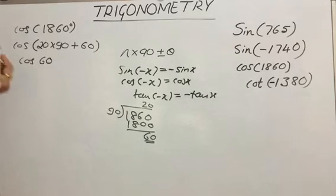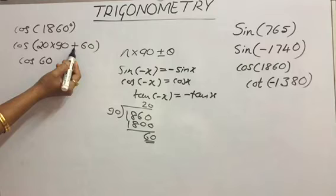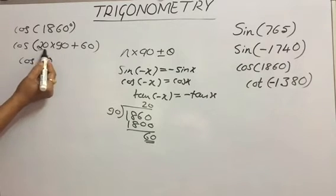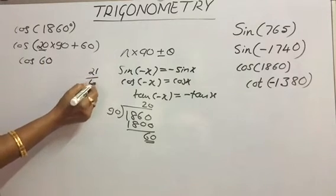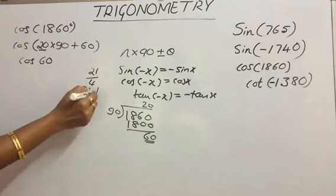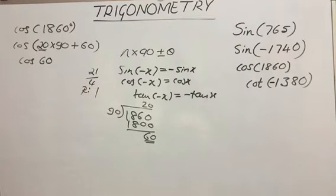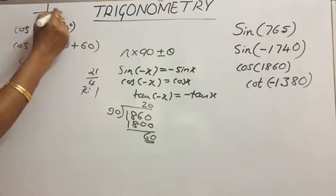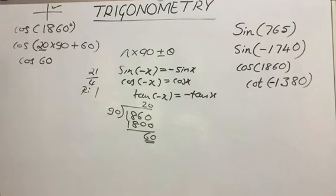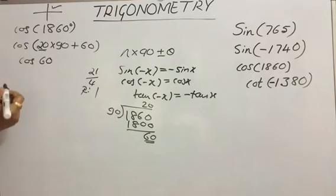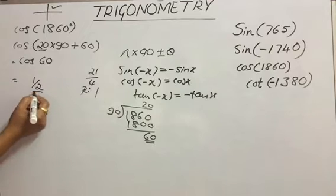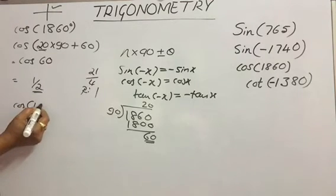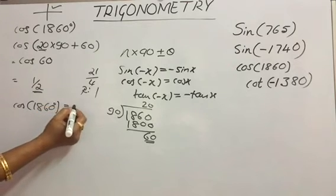Now check the quadrant. It is plus representation, so add 1 to n. n is 20; adding 1 gives 21. Dividing 21 by 4, the remainder is 1. If remainder is 1, angle lies in the first quadrant. In the first quadrant, all trigonometric ratios are positive, so cos is also positive. Therefore it is +cos 60. The value of cos 60° is 1/2. So cos(1860°) = 1/2.